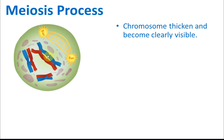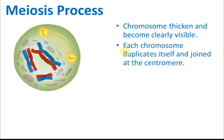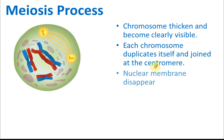Like mitosis, at the beginning of meiosis the chromosomes thicken and become clearly visible. Each chromosome then duplicates itself and joins at a centromere — this part of the process is the same as in mitosis.